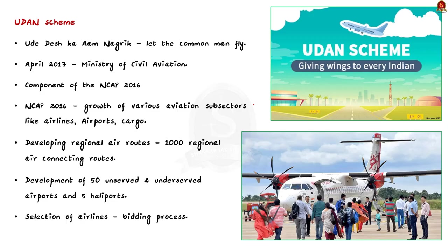UDAN is short for 'Ude Desh Ka Aam Naagrik,' which literally translates to 'Let the Common Man Fly.' This scheme was launched in 2017 under the Ministry of Civil Aviation. The government has fixed a 10-year plan for its implementation, with the duration extendable. The UDAN scheme is a key component of the National Civil Aviation Policy 2016, whose main objective is to provide an ecosystem for the harmonized growth of various aviation subsectors like airlines, airports, cargo terminals, etc.